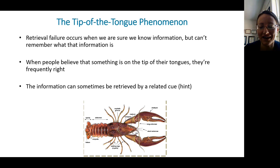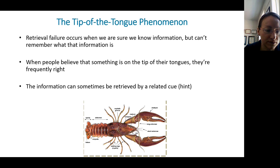That's called the tip of the tongue phenomenon. When people believe this is happening, they seem to be right that they know the information, and you can get it out if they're given a retrieval cue — some kind of hint.